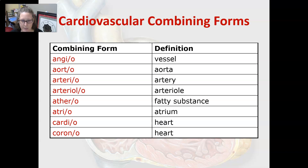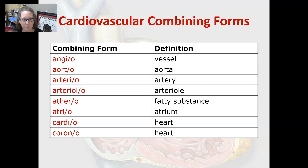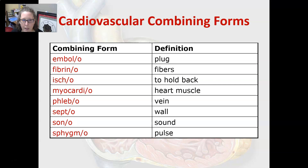Athero is a fatty substance often referred to as plaque. Atrio is the atrium. Cardio and corono both mean heart, but corono has a crown meaning and is often referred to as coronary circulation, which is the circulation of the heart. It kind of looks like an upside-down crown around the heart.